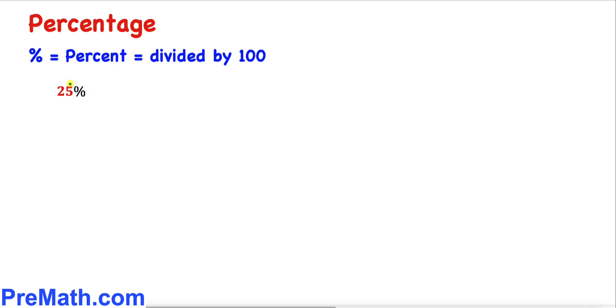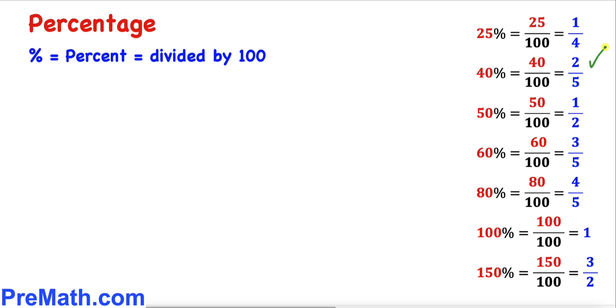Now let's look at 25 percent. According to definition, it's going to be 25 divided by 100 and if we reduce this fraction we get 1/4. Likewise, 40 percent means 40 divided by 100 and if we reduce that, it's going to be 2/5.